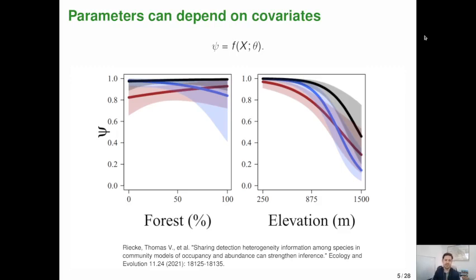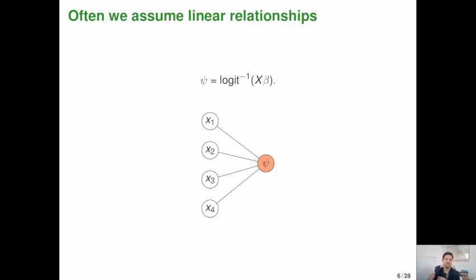Parameters in these models can depend on covariates. So for example, maybe we want the occupancy probability to depend on the fraction of forest or the elevation. Often we use linear assumptions here, maybe on like a transformed scale, like a logit scale. But still like the mapping from our predictors x to the parameter we care about is represented just using these slopes, essentially.